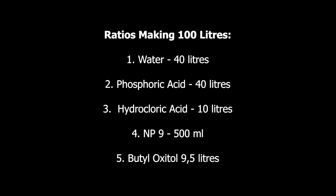NP9 should be 0.5% of the total volume — out of the 100 liters that we're manufacturing, we need about 500 mils of NP9. Then your butyl oxytone should be 9.5% of the total volume.